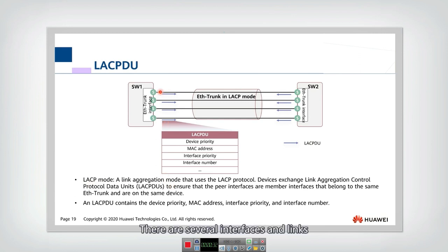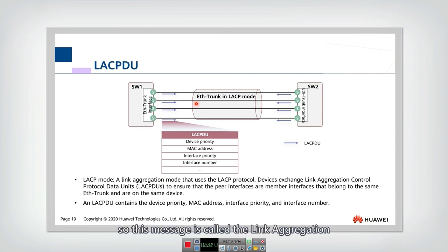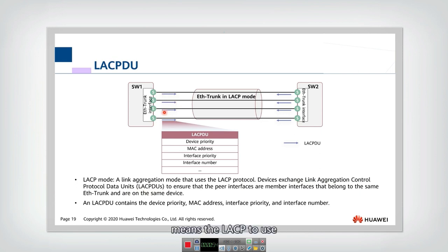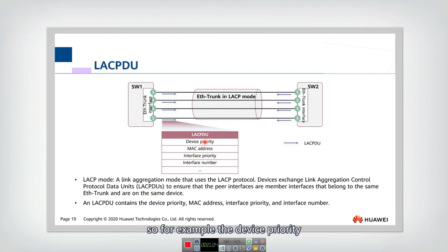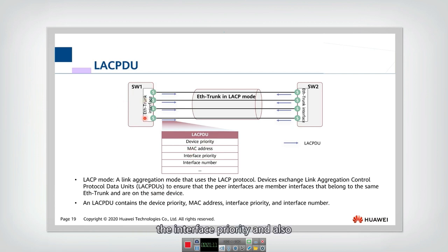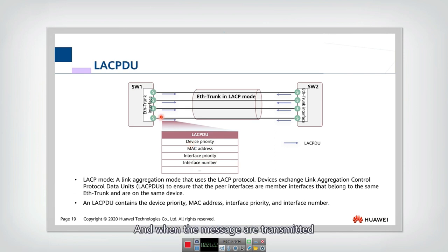The idea is like this: there are several interfaces and links, and to configure the link aggregation, they will first send several messages. This message is called the Link Aggregation Control Data Unit — LACPDUs. This arrow represents the LACPDUs. In this message, several pieces of information are included, such as the device priority of switch one, the MAC address of the interface, the interface priority, and also the interface number.